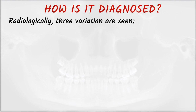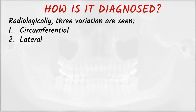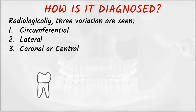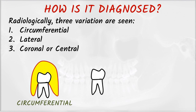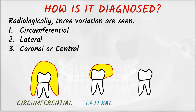Radiographically, three variants of dentigerous cyst are seen: first is circumferential, second is lateral, and third is coronal or central. Look at the figure — the yellow shaded area represents the circumferential cyst around the impacted third molar, then the lateral variant, and finally the central or coronal variant.